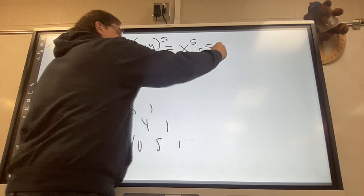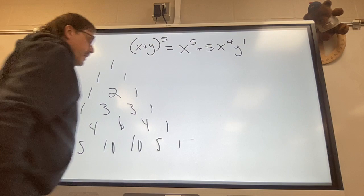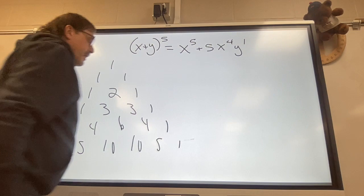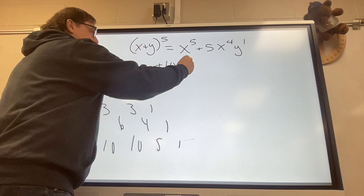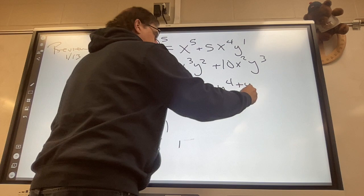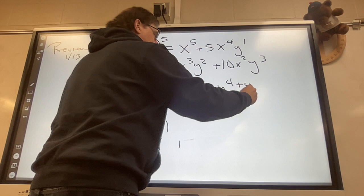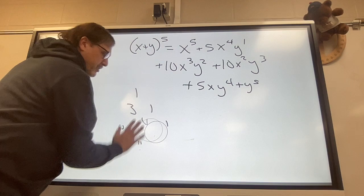And it expands simply as x starts as the biggest x, y as the smallest y. X to the fifth, y to the zero, plus five x to the fourth y to the first, plus ten x to the third y squared, plus ten, I get it, I get it. Plus five x y to the fourth, plus y to the fifth. So that's like problems number one and two.